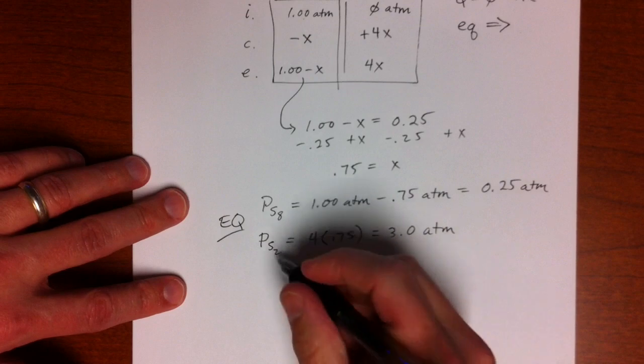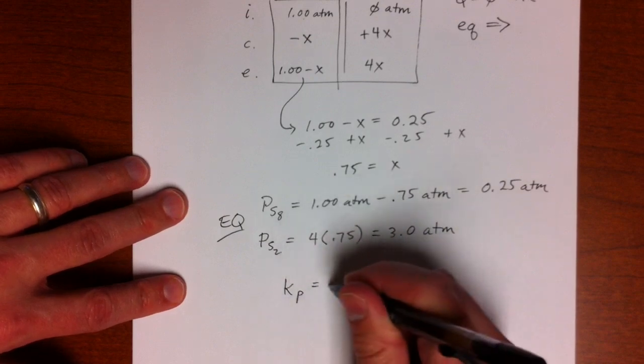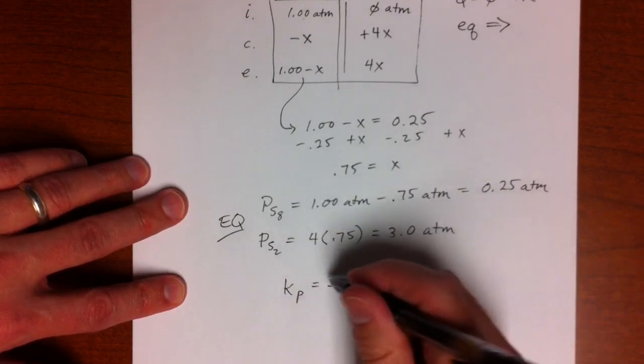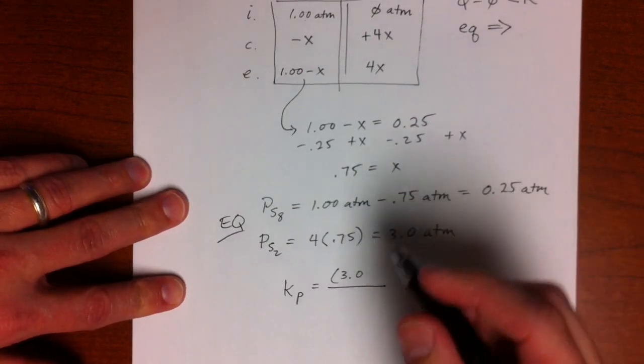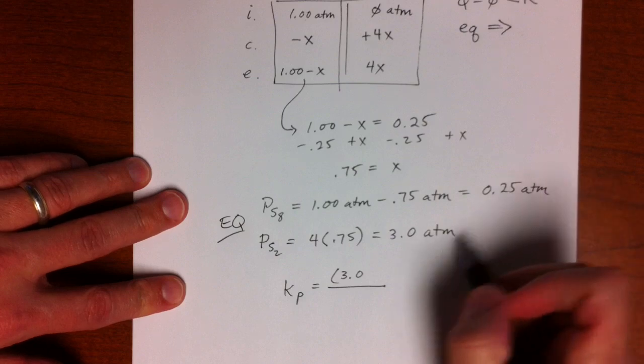Okay, now we can plug them back in. KP would be the pressure of S2 to the 4th power. We'll go ahead and drop the units now that we're writing K. Just make sure these are atmospheres.